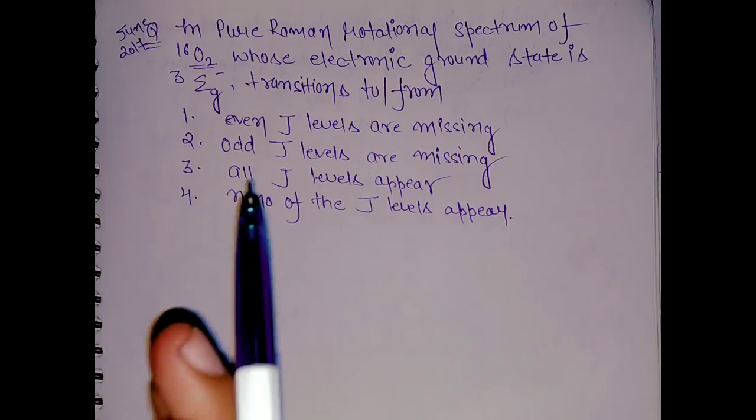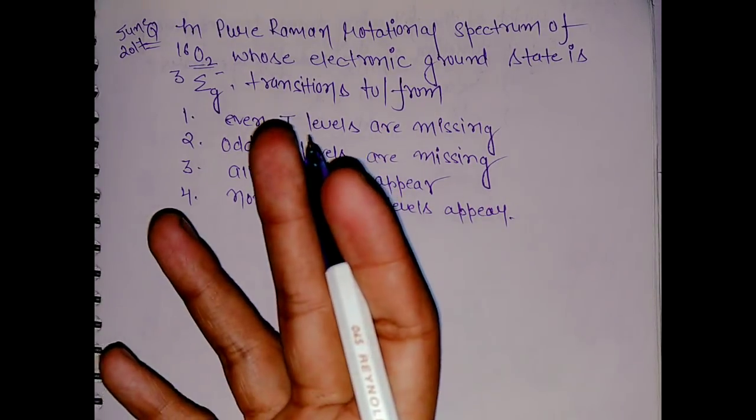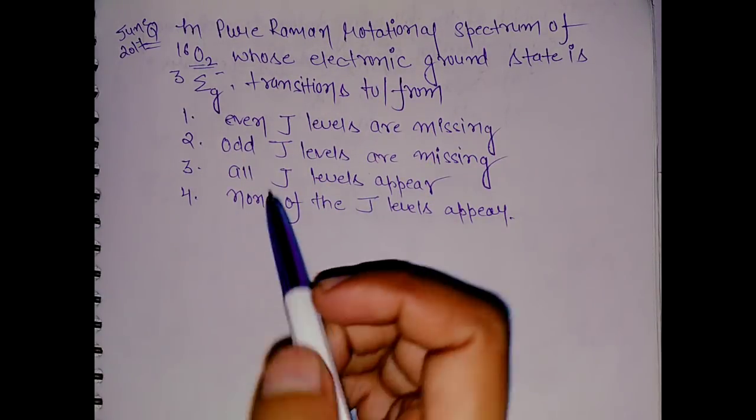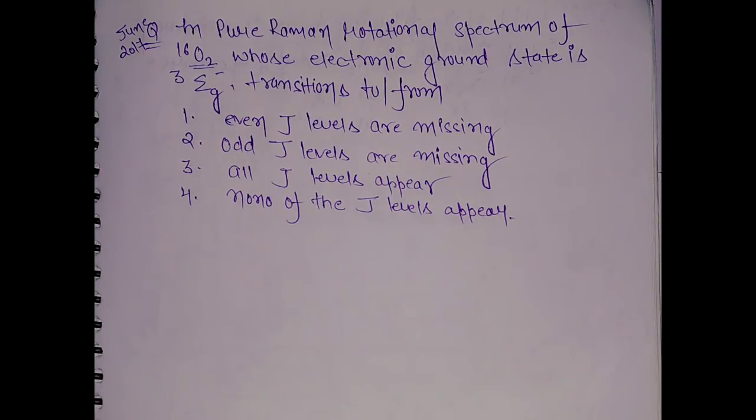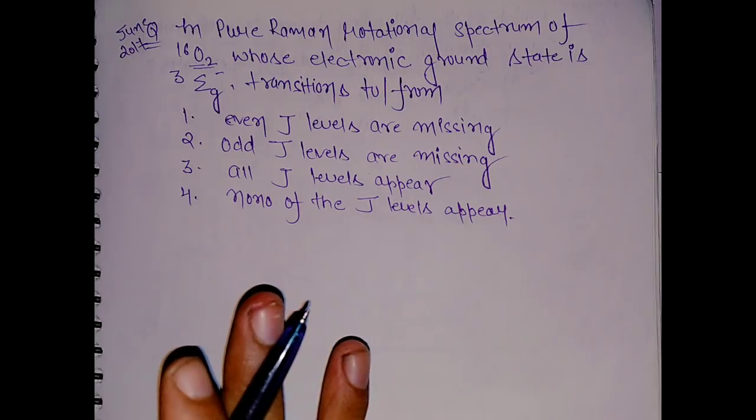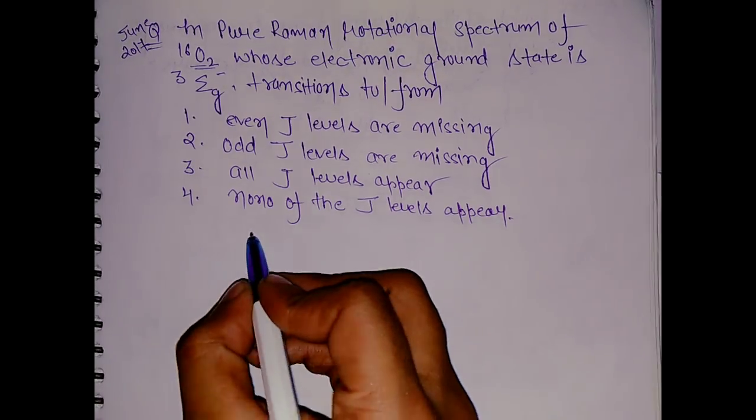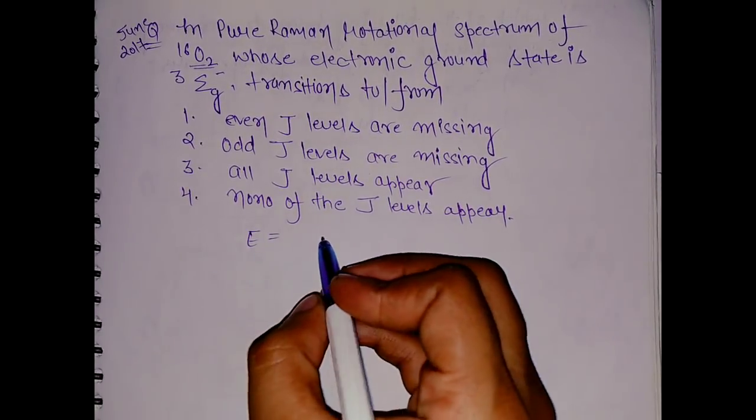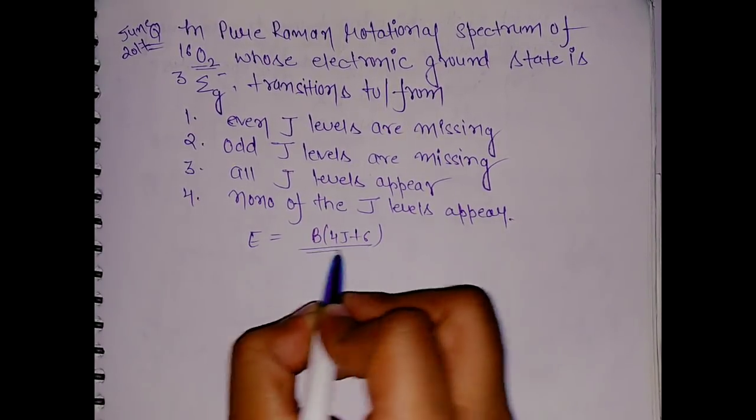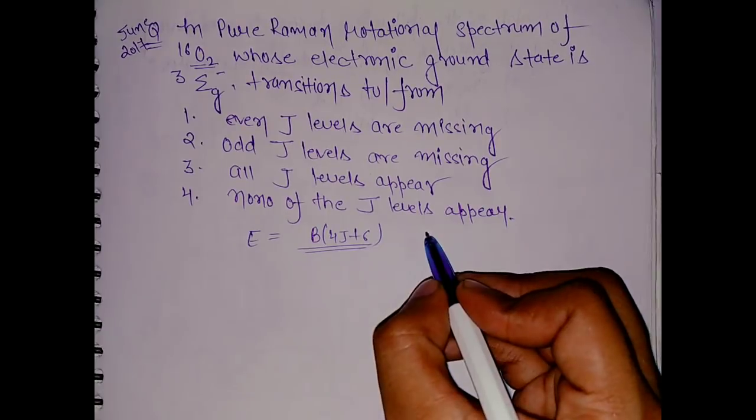For nuclei which are magnetically inactive, in Raman rotational spectrum the transitions originating from even J numbers are absent. This is known as abnormal Raman spectra. In Raman spectroscopy we have energy equals to B(4J + 6), so the first transition will appear because delta J is plus minus 2, as Raman spectroscopy is a two-photon process.